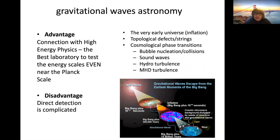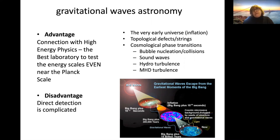Gravitational waves propagate almost freely from the moment of their generation. At this point, they can retain information about the very, very early moments of the universe, even the birth of the universe, and they can give us clues about what kind of physics — if it is some new physics — exists at very high energies. The disadvantage is that it is quite difficult to detect gravitational waves, both directly or indirectly.